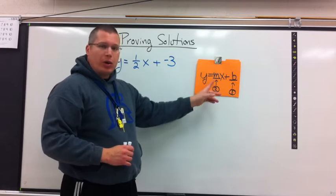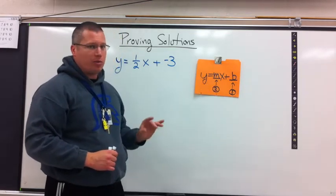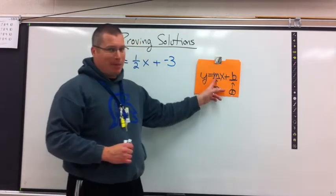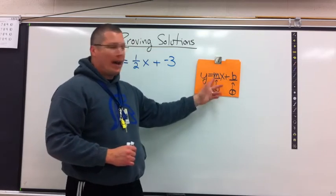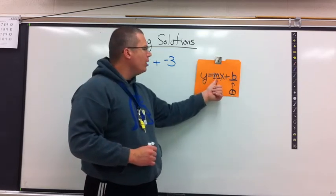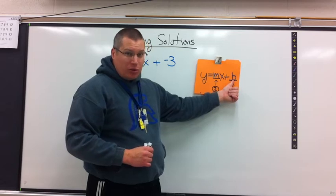What we're going to start doing is using traditional variables to mean slope and intercept. Slope typically is the m. Why it's not s, I don't know. Y-intercept is usually the b.